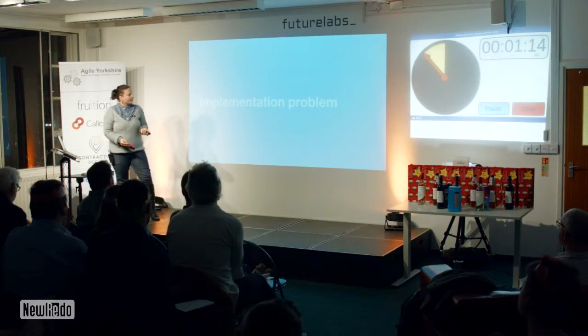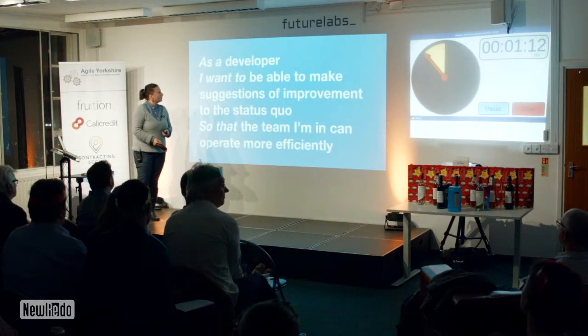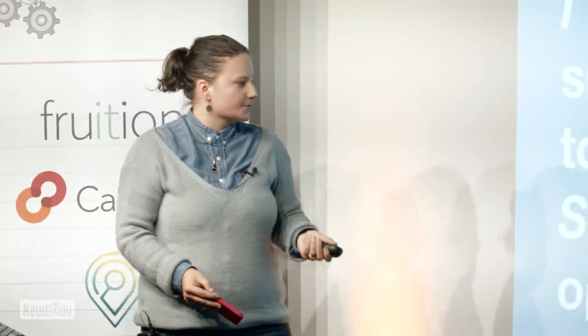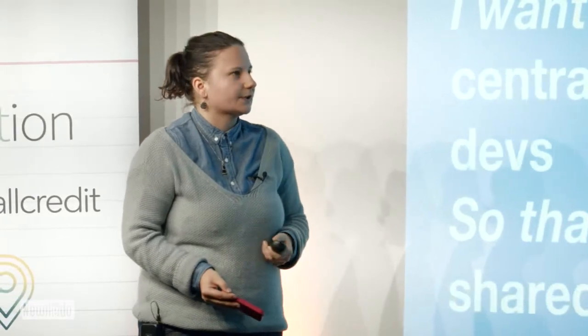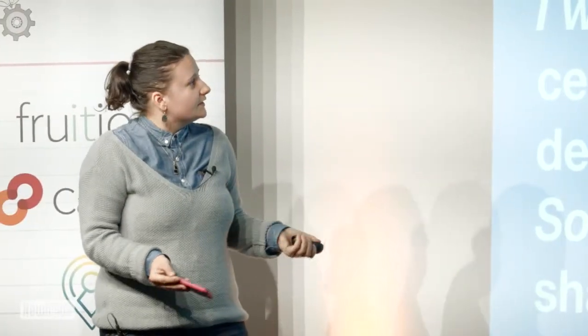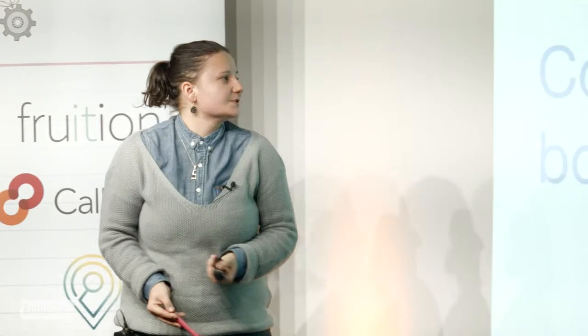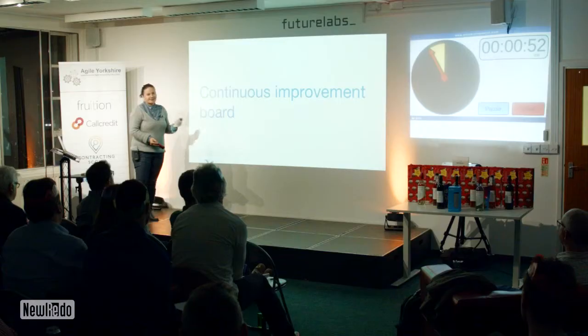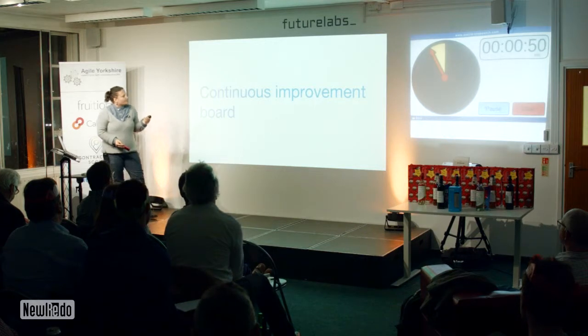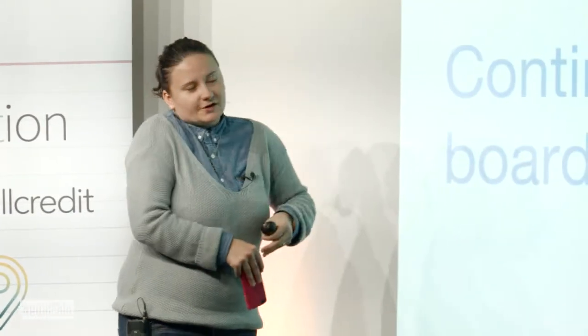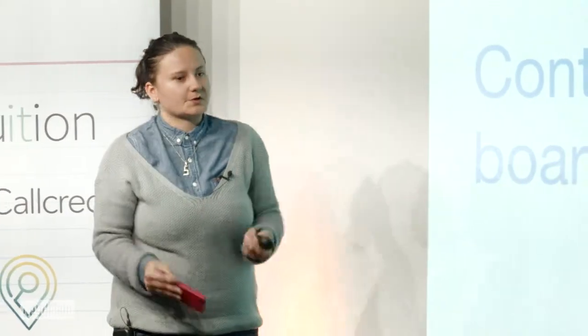The second problem I identified was the implementation problem. As a developer, I want to be able to make suggestions for improvement so the team can operate more efficiently. As a dev team lead, I want to collate central ideas from talented devs so improvements can be shared across the board. The solution is a continuous improvement board — sharing within a team is fine, but sharing across the board is even better. Through the transition to the new tech stack, we learn from past mistakes and improve processes.